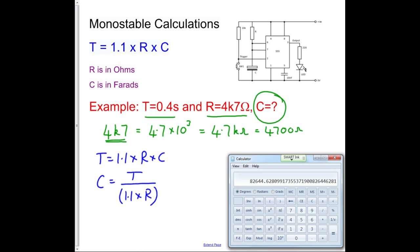So we'll find our Windows calculator. We'll cancel that big number off there, and we'll go C equals 0.4, which is our time period we're trying to achieve, divided by, open brackets, 1.1, multiplied by, and then the resistor value which we happen to have, which is 4.7 times 10 to the 3, close brackets, equals.